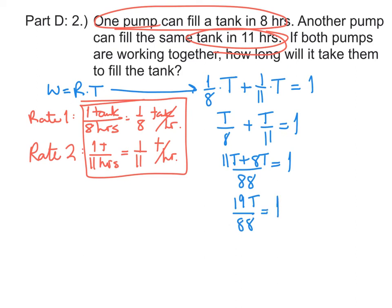To solve the equation, I need to get rid of 19/88. So I'm going to multiply by the reciprocal, 88 over 19. And I'll do that on both sides of my equation. When all of that cancels, we see that t, the amount of time, is 88 over 19.